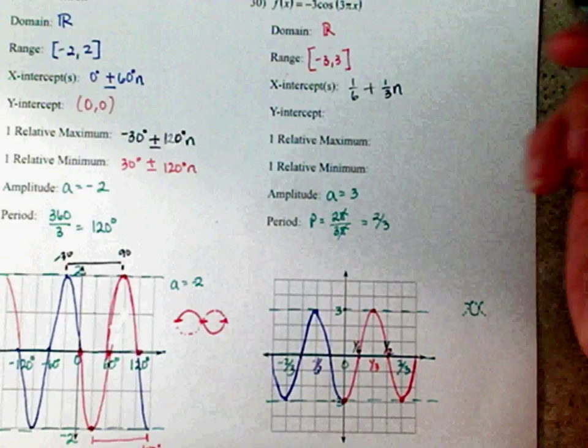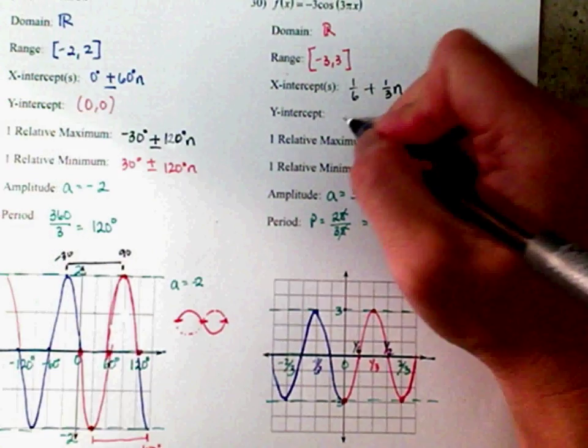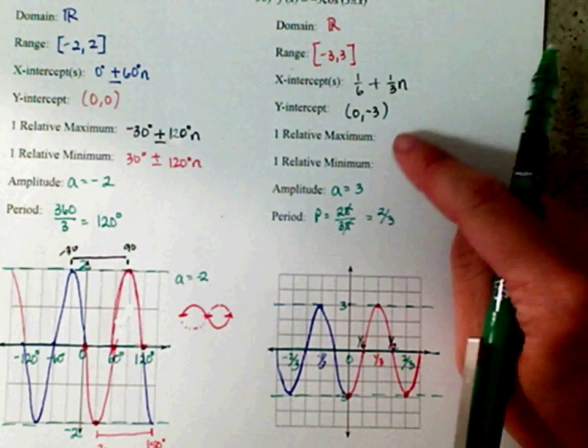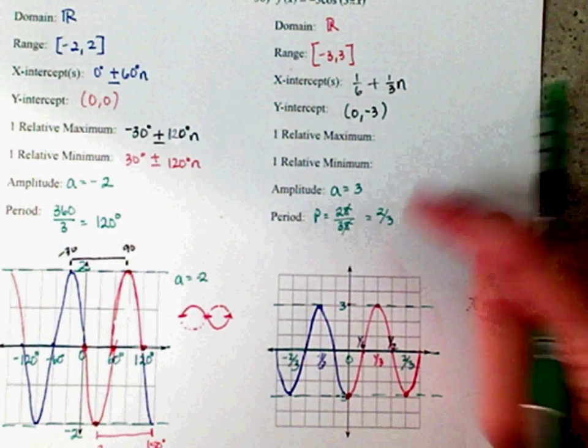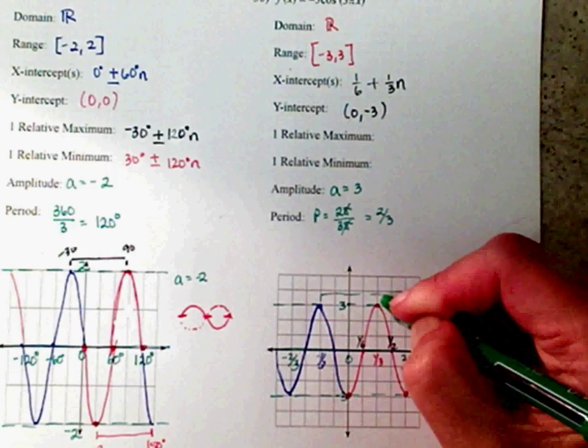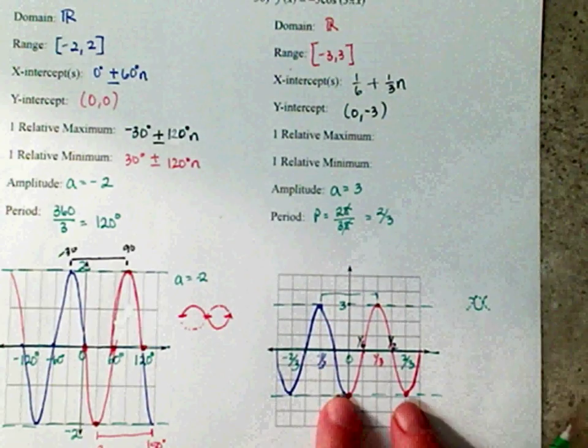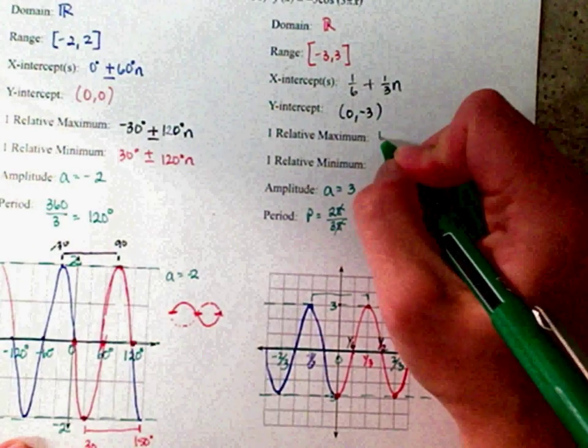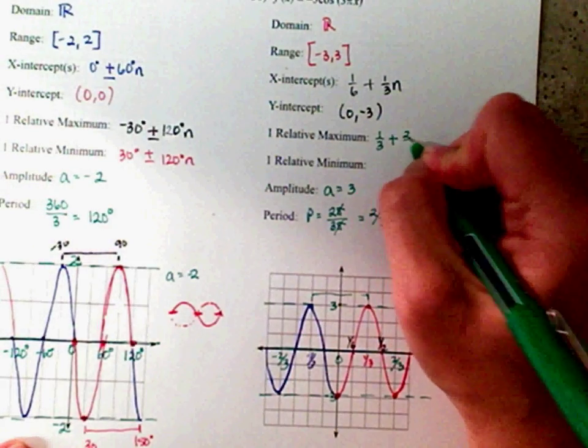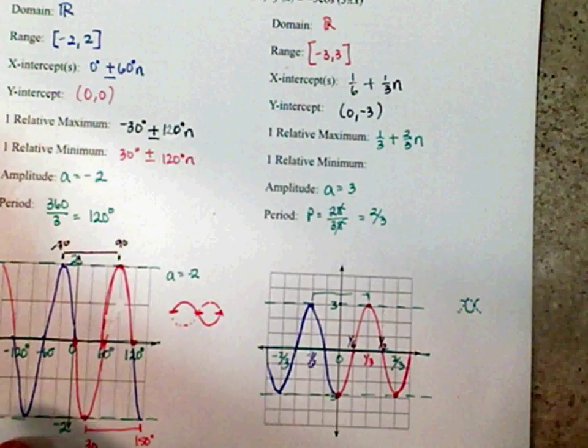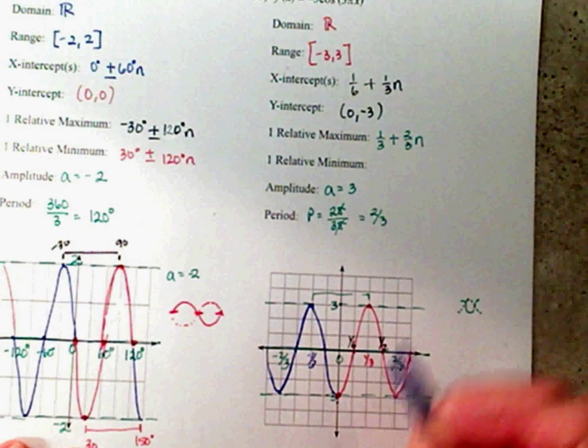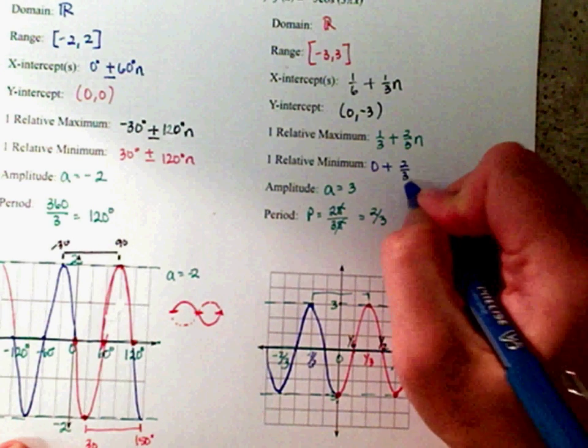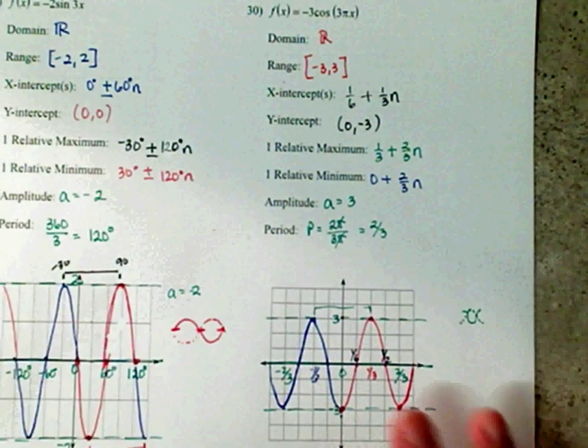Your y-intercept is at 0, negative 3. Your relative maximum. Take a look at this period. You see how it's going from here to here. What is the distance between here and here? It's 2 thirds. So, I'm going to start off at 1 third plus 2 thirds n. Or, you can list them out. And then, your minimum right here starting at 0 plus 2 thirds n. And there you have it. I would rather write this unless you want to list them all.